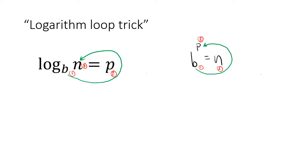If we're going from an exponential to a logarithm, we'd say: the first thing we write is 'log', then the base — so log base B — then the argument N, equals P. This might seem insignificant, but it's a great way to avoid memorizing where the letters go. You can just do this trick every time and write it out in the order that it shows you.